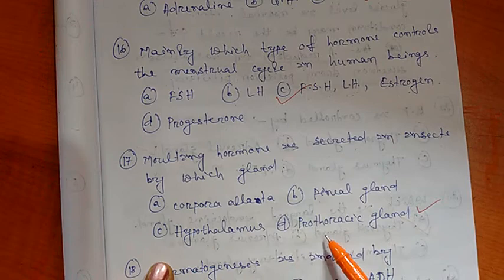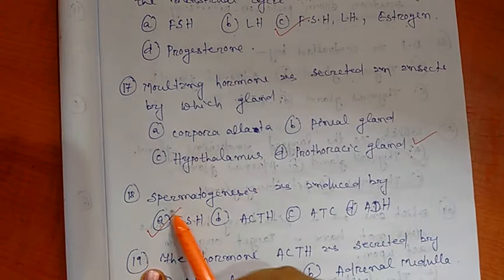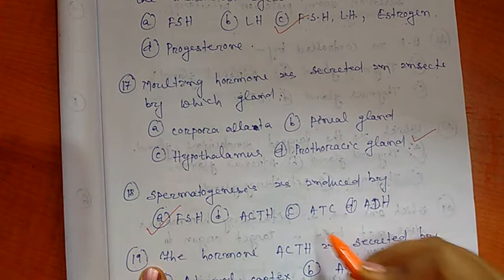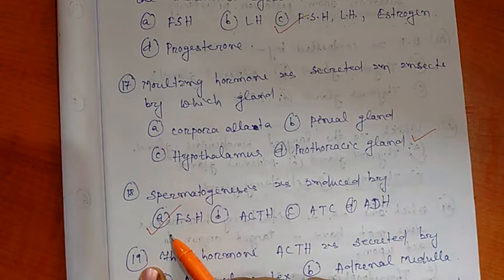Question number 18: Spermatogenesis is induced by. Options are A) FSH, B) ACTH, C) ATH, and D) ADH. So the right option is FSH, that is follicle stimulating hormone.